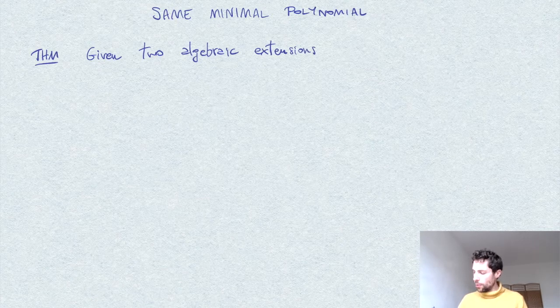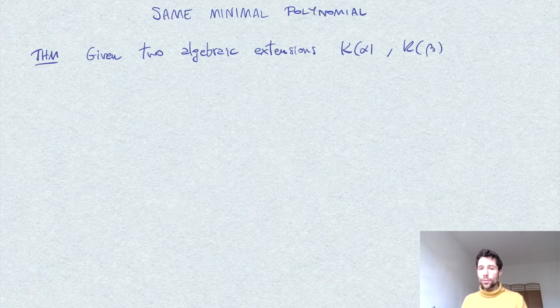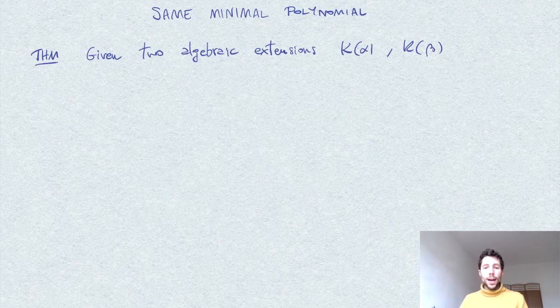simple extensions of the form K(α) and K(β), where K is our ground field, then suppose α and β have the same minimum polynomial.